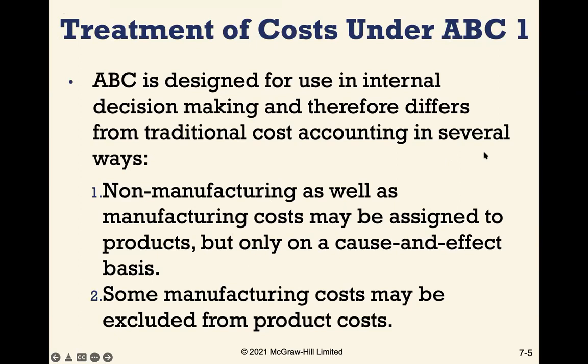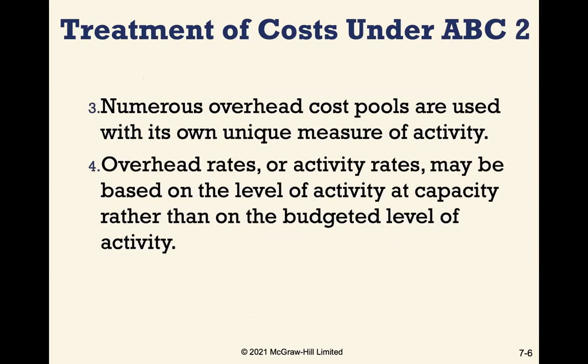ABC, or activity-based costing, is designed for internal decision-making and differs from traditional cost accounting in several ways. Non-manufacturing as well as manufacturing costs can be assigned to products, but only on a cause-and-effect basis. Some manufacturing costs may be excluded from product costs under ABC. Numerous overhead cost pools are used, each with its own unique measure of activity, and overhead rates may be based on activity at capacity rather than on the budgeted level of activity.